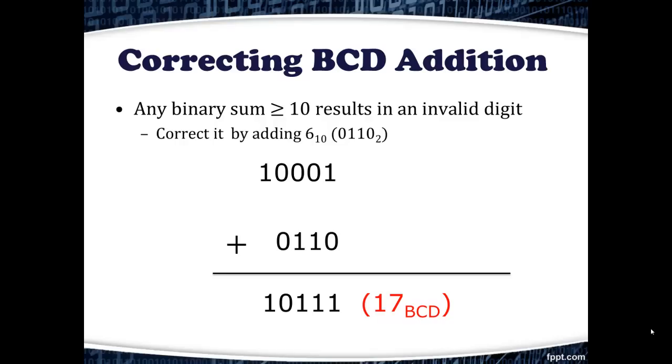In the previous example, our end result was 10001, or 11 using the Binary Coded Decimal scheme. By adding 6, or in binary 0110, we end up with the actual value for 17, 10111.